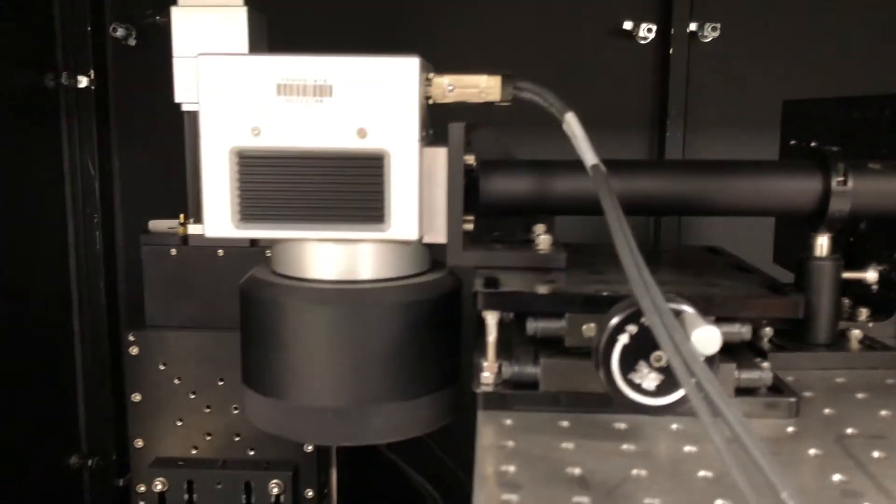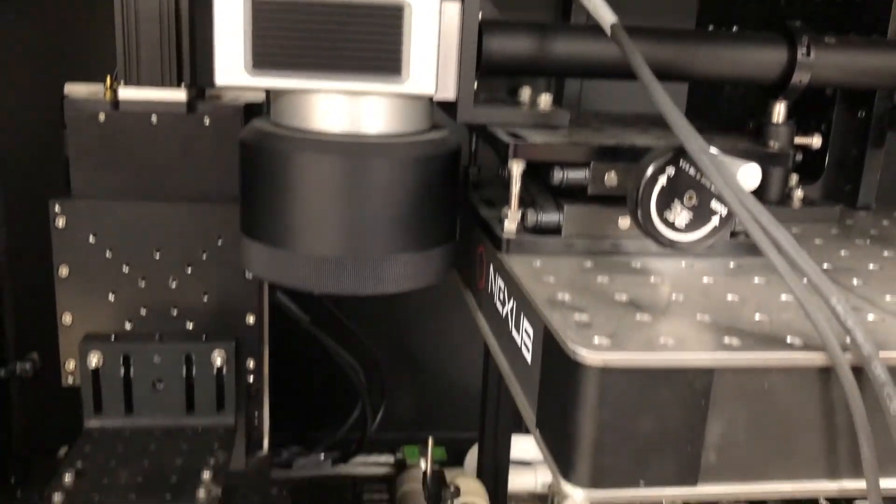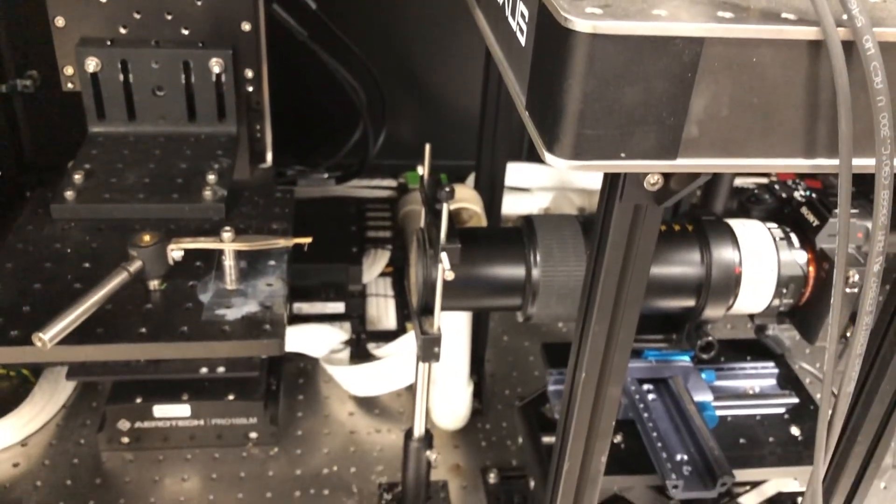The metallic box is the galvanometer which rapidly oscillates the beam back and forth to create a cutting sheet that ablates the sample positioned below at the focal plane of the camera.